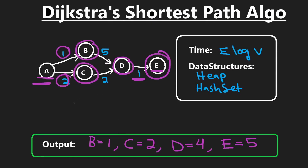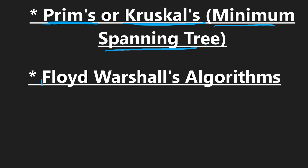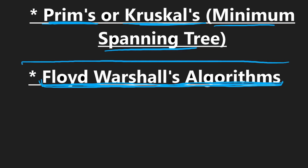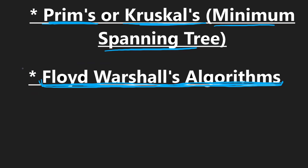That covers the top five most common graph algorithms for coding interviews. A couple more algorithms occasionally come up but are pretty rare: Prim's or Kruskal's algorithm for minimum spanning trees — they're comparable, so learning one is enough — and Floyd-Warshall's algorithm, which is similar to Dijkstra's but quite rare in interviews. If you found this helpful, please like and subscribe, and consider checking out the Patreon. Thanks for watching!